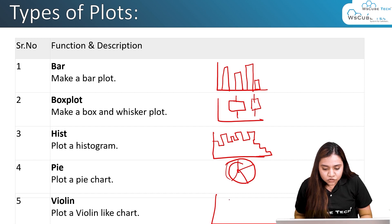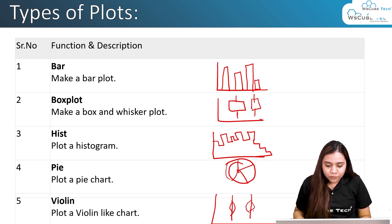The violin plot is an interesting plot. It looks like this, it has a density on both sides. It basically looks like a violin, that's why it has been named violin plot.